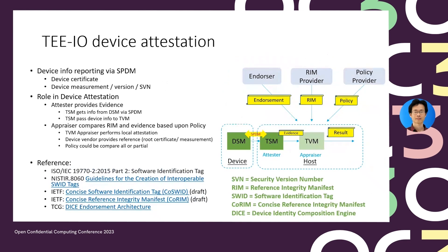Second, the TVM needs a way to verify the device to ensure it's the right device — this is called TEIO device attestation. The SPDM protocol defines a standard mechanism to allow the device to transport the device certificate chain and device measurement to the host. The certificate chain may include a root CA cert, intermediate cert, and device cert. The device measurement may include the digest of device ROM and firmware, hardware configuration, firmware configuration, version and secure version number, and device state such as whether debug mode or recovery mode is enabled.